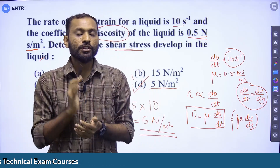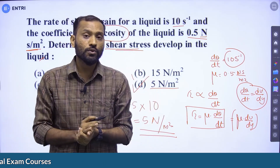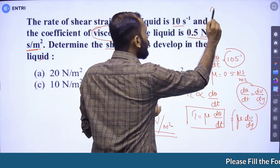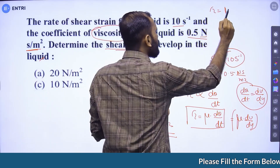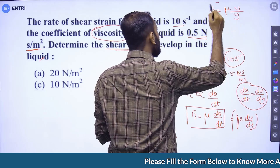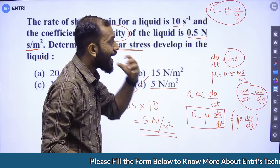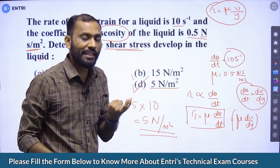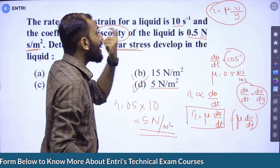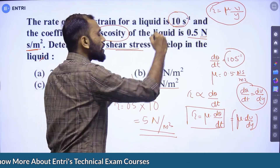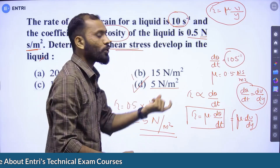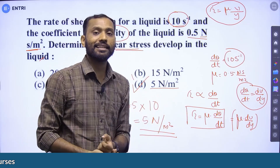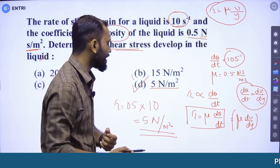You can directly use the equation as per Newton's law of viscosity: tau equals mu into d-theta by dt.